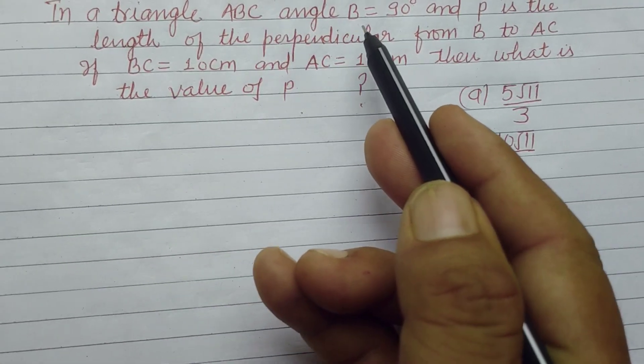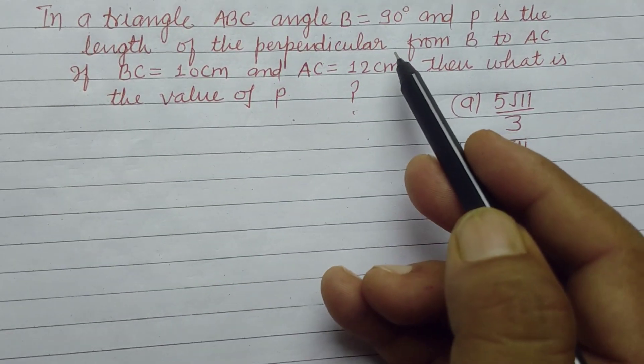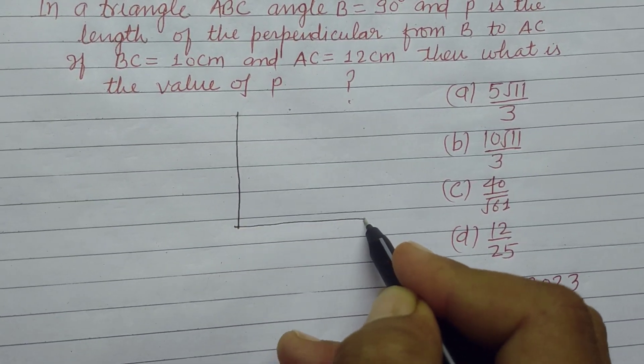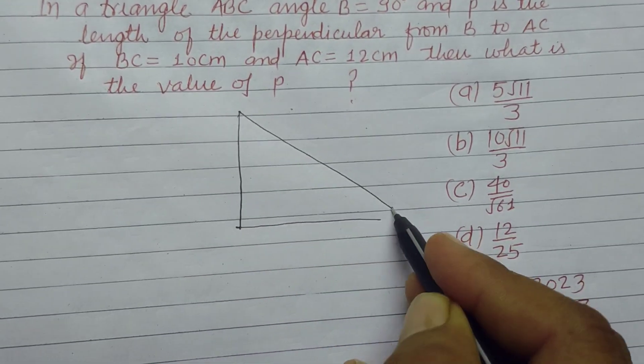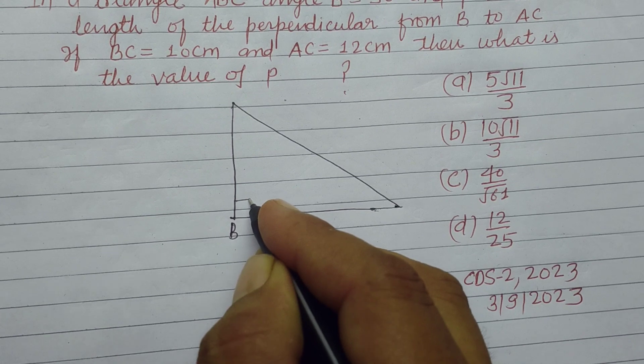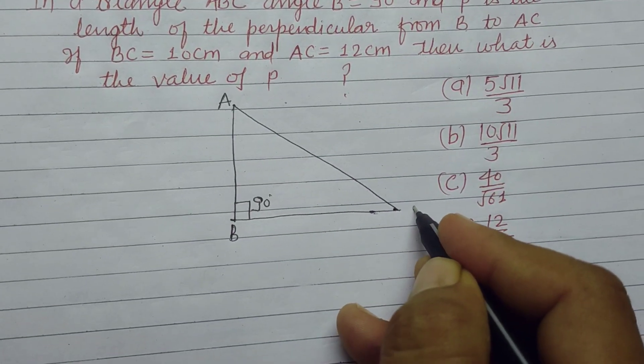In a triangle ABC, angle B is 90 degrees and P is the length of the perpendicular from B to AC. First we take a right angle triangle here whose angle B is 90 degrees, and this is A and this is C.